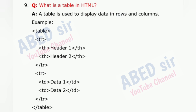Question 9: What is a table in HTML? A table is used to display data in rows and columns. Example: <table>, <tr>, ...